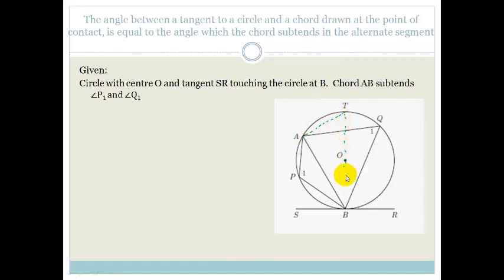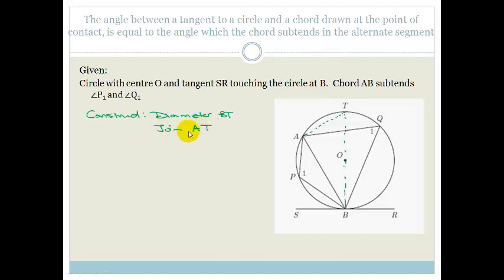I'm going to construct diameter BT and then join AT. The reason I want to do this is so I can start working with what I've got. What I'm trying to prove is that the angle between the tangent and the chord is equal to the angle subtended by that chord in the alternate segment — in other words, that one angle equals the other.